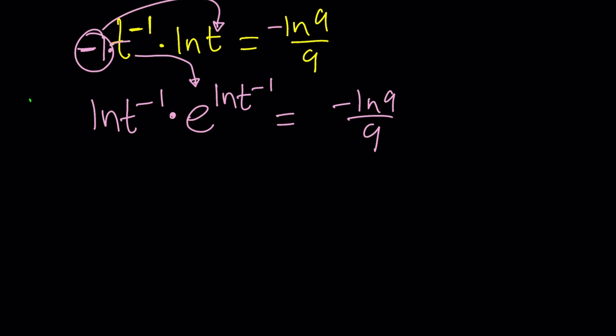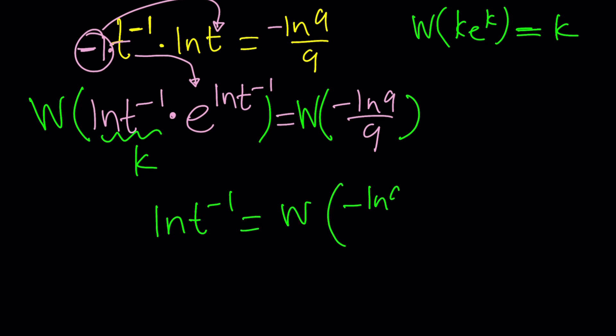And, now if I apply Lambert's W function on both sides, then the left-hand side will simplify. Because, this is going to be my new t now or x or k, whatever. Let's just call this k and apply W to k*e^k like kek. And, which means cake in Turkish. By the way, it's interesting. And, this will become k. Make sense? So, when you apply it, it's going to be ln(t^(-1)) = W(-ln(9)/9).